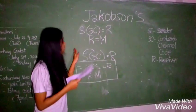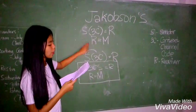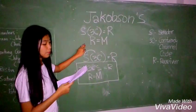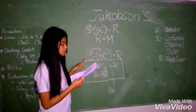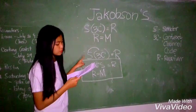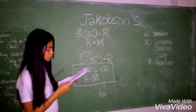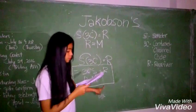Then, first we have to find the value of R to find the value of F because R equals M. Then, the sender will be using the 3C, which is the context, channel, and code.